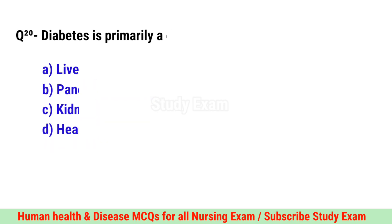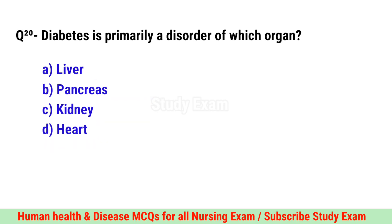Question No. 20. Diabetes is primarily a disorder of which organ? Correct option is B. Pancreas.